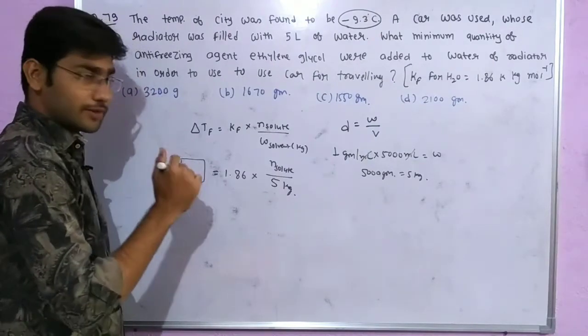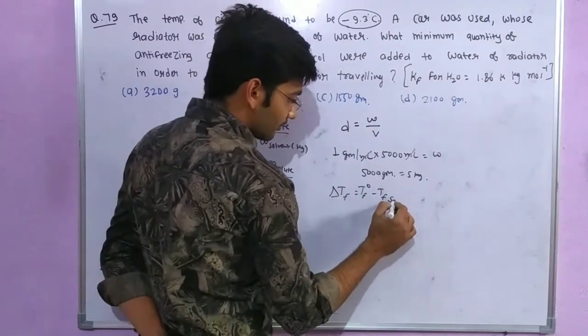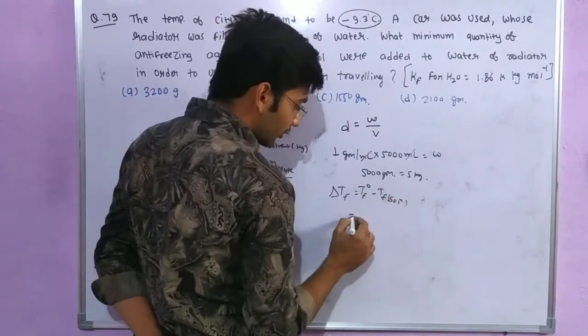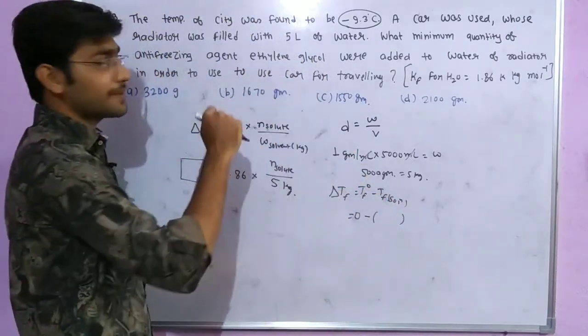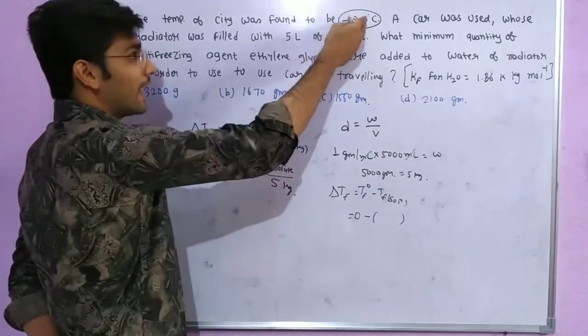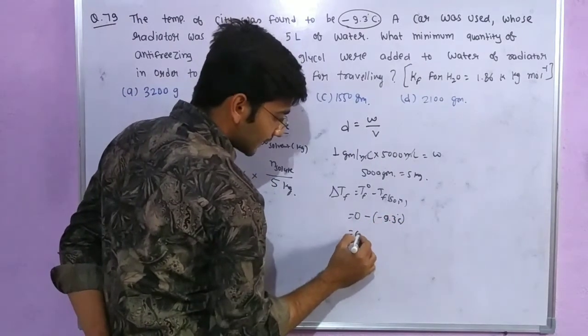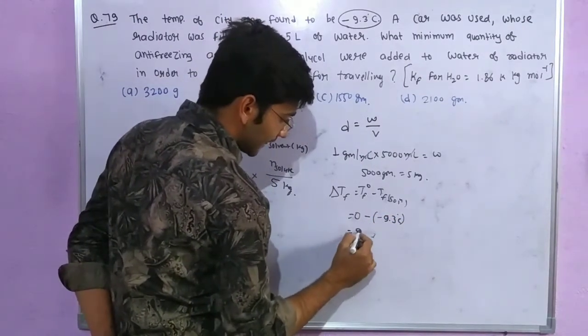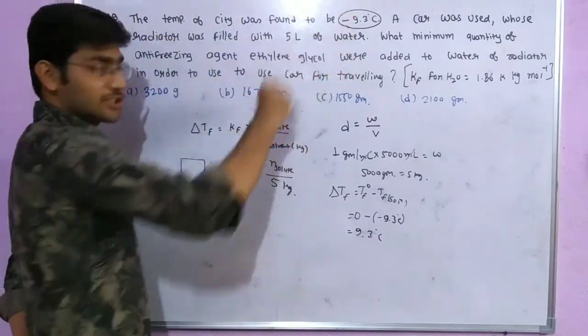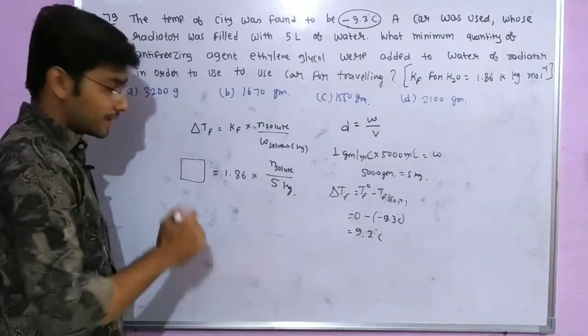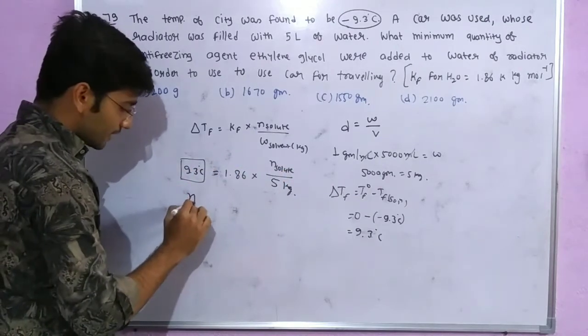Delta TF is TF of solvent minus TF of solution. Water freezing is zero degree Celsius minus the solution temperature, which is the city temperature minus 9.3 degree Celsius. This gives plus 9.3 degree Celsius depression in freezing point.